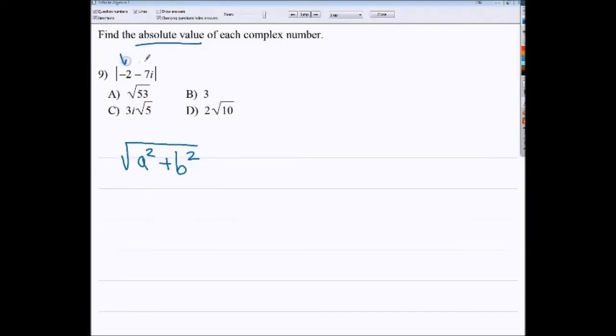So an a would be this number, and b would be the number in front of the 7. So you'll do negative 2 squared, but squaring it doesn't matter. So you can just do 2 squared plus 7 squared. 4 plus 49. And you end up with the square root of 53.